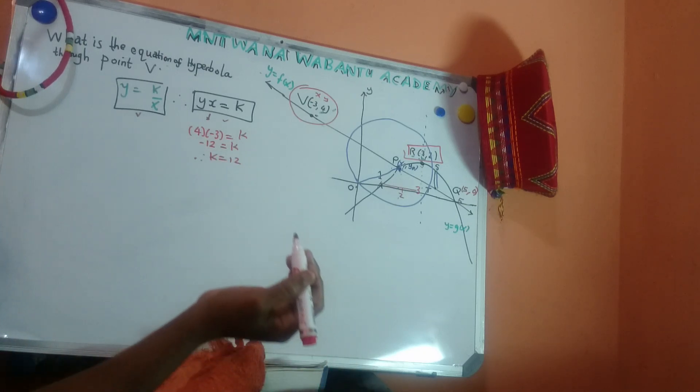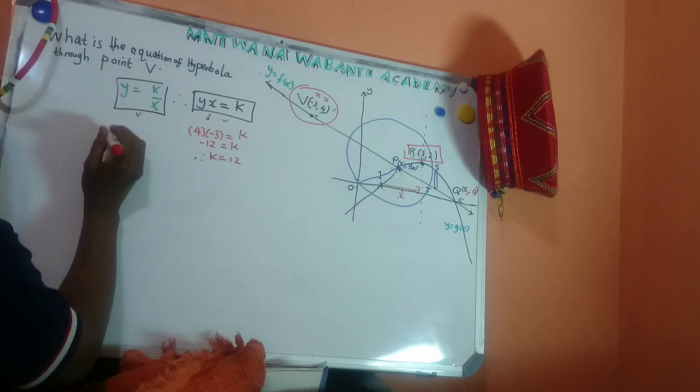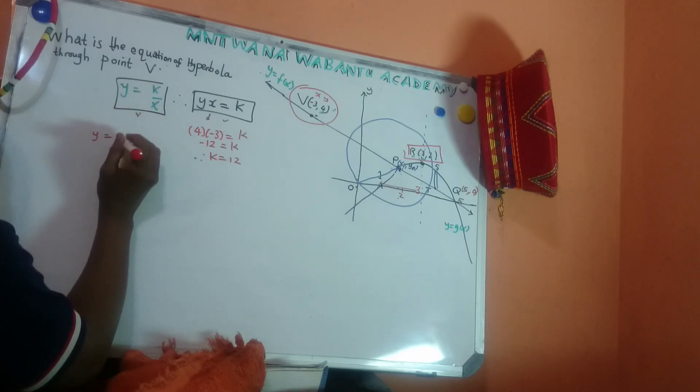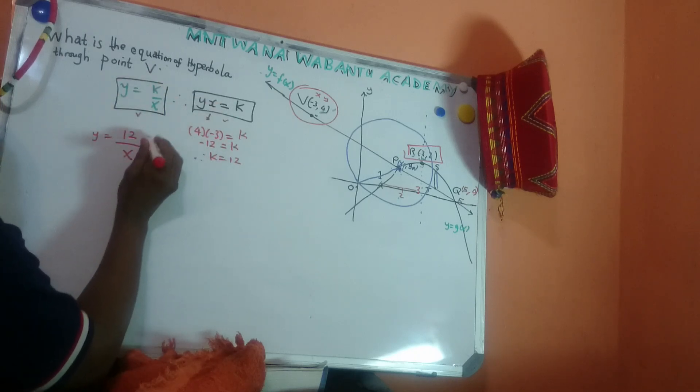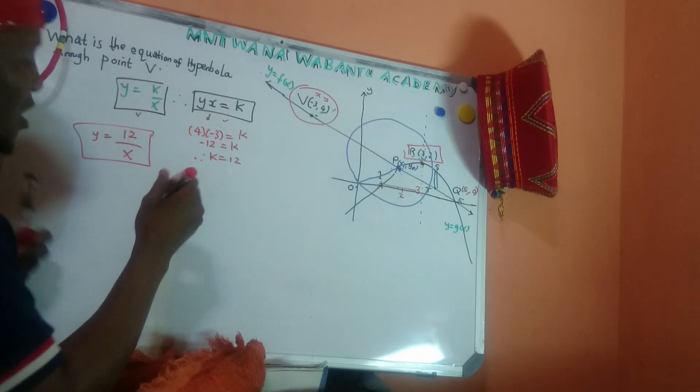So, now, okay, I can write the standard equation of hyperbola now. So, my standard equation of hyperbola is y equal to k. I know my k now. It's negative 12 over x. So, it's the standard equation of hyperbola. Done.